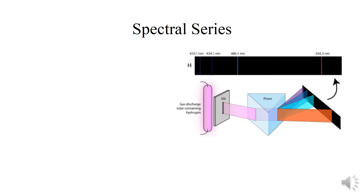Spectral lines को हासिल करने के लिए सबसे पहले जो काम किया वो 1885 में scientist J.J. Balmer ने। उसने work out किया और spectral lines obtain कीं। Basic setup जैसा कि आप diagram में देख रहे हैं — हमारे पास a gas discharge tube है, जो भी element under investigation है उससे निकलने वाली light एक slit के through filter की जाती है और light को prism पर fall करवाया जाता है। Prism अपنी nature की وجह سے according to wavelength light کو الگ الگ patterns اور directions میں موڑ دیتا ہے۔